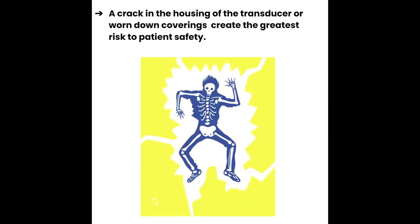In addition to making sure to only use ultrasound as necessary, the sonographer should also make sure that the equipment is in proper working order. Refer back to Unit 22 Quality and Performance for more guidelines on quality assurance. Now the machine can be a source of electrical and mechanical hazards as well to the patient. In fact, a crack in the housing of the transducer or worn down coverings creates the greatest risk to patient safety. Electrical shock can occur if the transducer integrity is diminished.